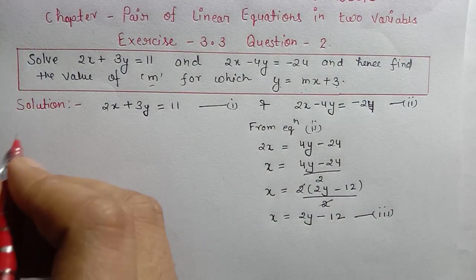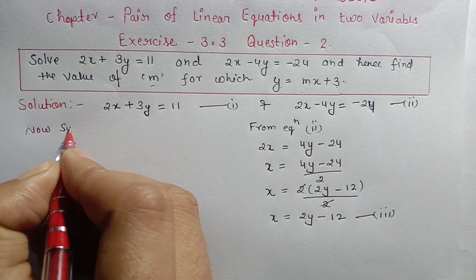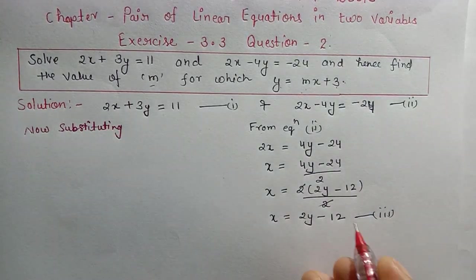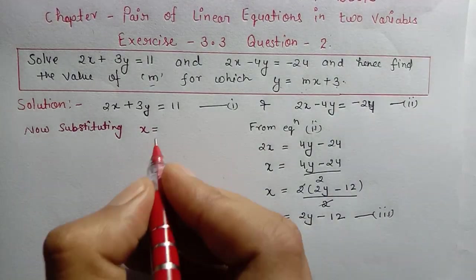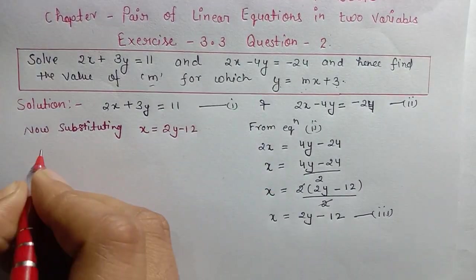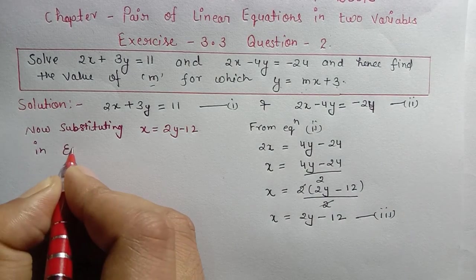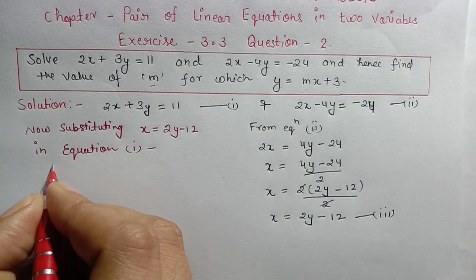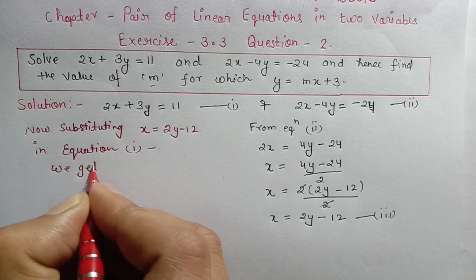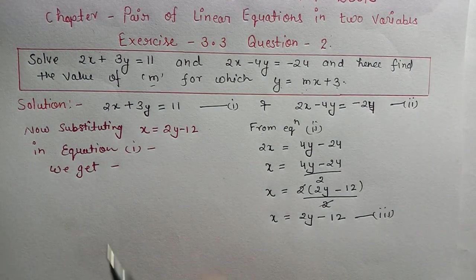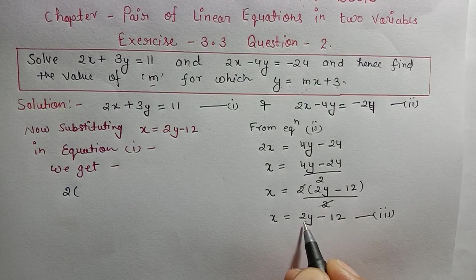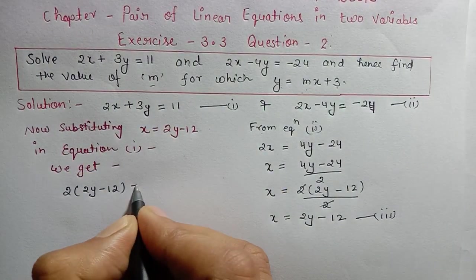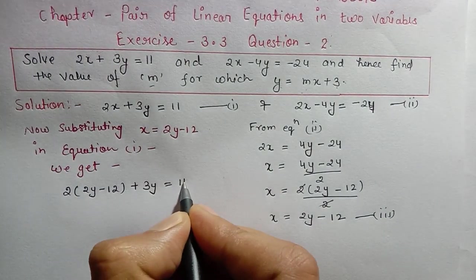Now we substitute x = 2y - 12 into equation number one. Substituting x = 2y - 12 in equation 1, we get: 2(2y - 12) + 3y = 11.